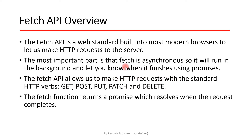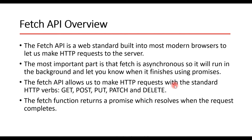We can use Fetch API to make asynchronous requests to the server, and it allows us to make HTTP requests using the standard HTTP verbs such as GET, POST, PUT, PATCH, and DELETE. In the previous video we created a Spring Boot React step-by-step example using Axios. In this video I'm going to use the same example and just replace the Axios HTTP request call with the Fetch API request call.